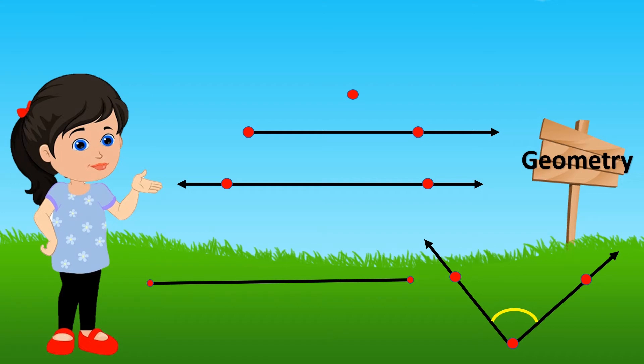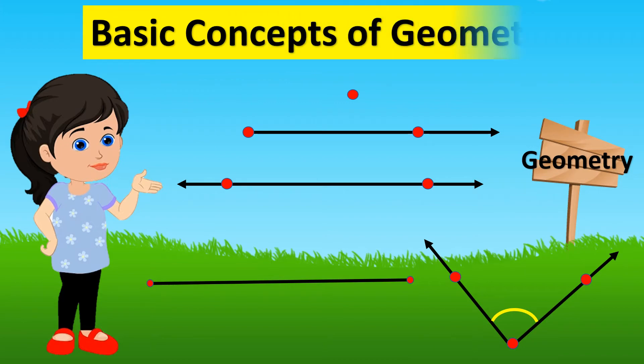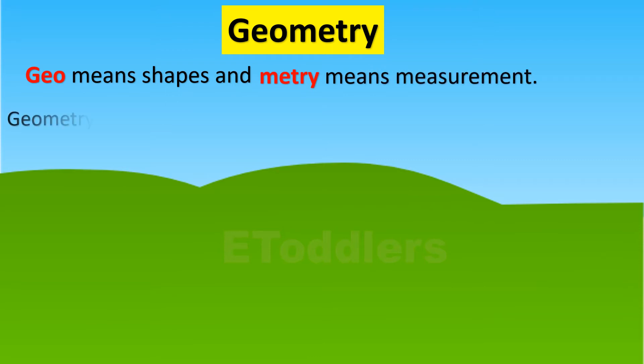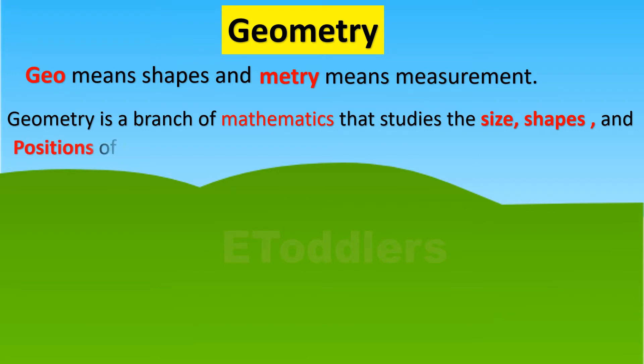Let's learn about the basic concepts of geometry. Geo means shapes and metry means measurement. Geometry is a branch of mathematics that studies the size, shapes, and positions of things. There are flat 2D shapes.